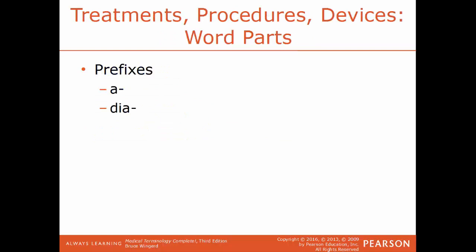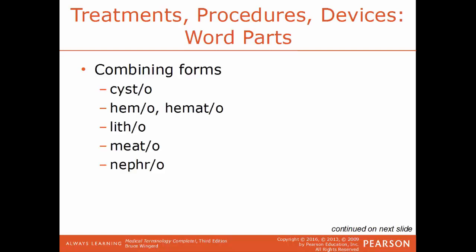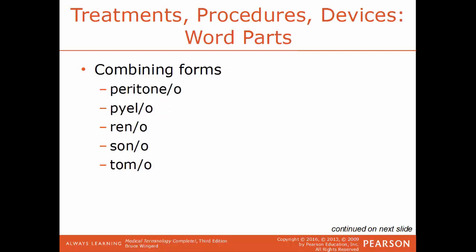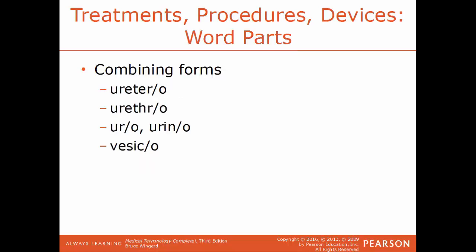Now we'll talk about some treatments, procedures, and devices word parts. Prefixes: a means out or lacking; dia means complete or through. Common combining forms: cysto is a reference to a cyst; hemo or hemato means blood; litho means stone; meato means a meatus, an opening to an interior part of the body; nephro is a reference to the kidney; peritoneo is a reference to the peritoneal cavity; pylo is a reference to the renal pelvis; reno is a reference to the kidney; sono is a reference to sound; tomo is a reference to cutting; uretero is a reference to the ureters; urethro is a reference to the urethra; uro or urino is a reference to urine; and vesico is a reference to the urinary bladder.